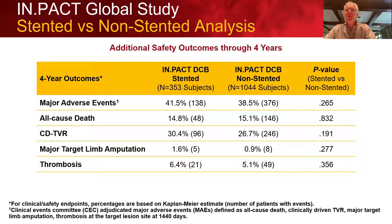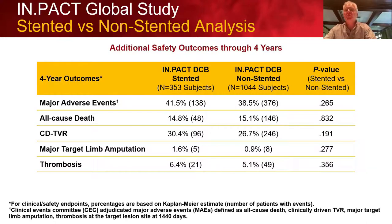Safety outcomes showed no difference between the two groups. No downside was seen from placing a stent to optimize results from complex disease. Additional safety outcomes through four years: no difference in any major adverse event, very similar all-cause death — actually lower than expected for the natural history of this disease at four years — no difference in clinically-driven total vascular revascularization, low major target limb amputation, and very low thrombosis in both groups.